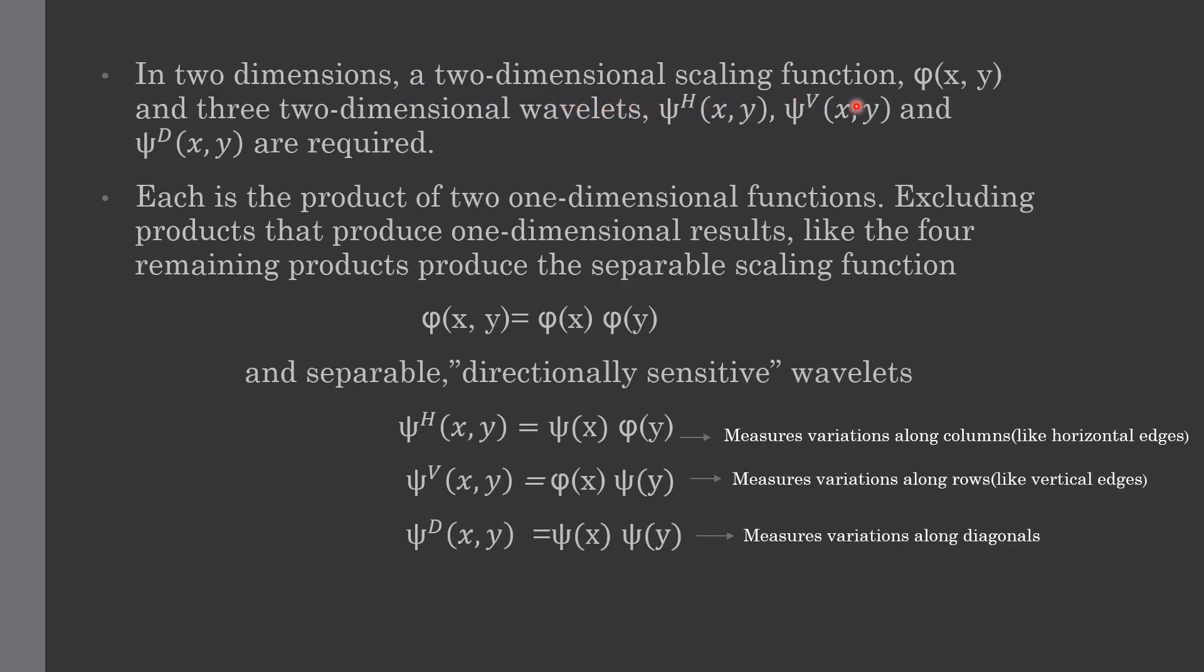In 2D, there will be a two-dimensional scaling function phi and three two-dimensional wavelets psi h, psi v, psi d. Each of them is a product of two one-dimensional functions. Excluding products that produce one-dimensional results, the four remaining products produce a separable scaling function phi.